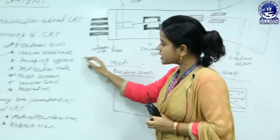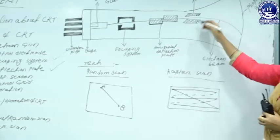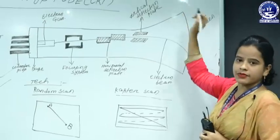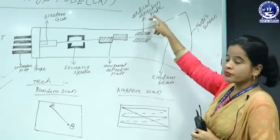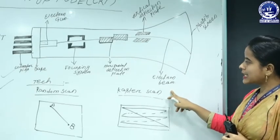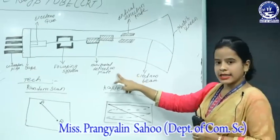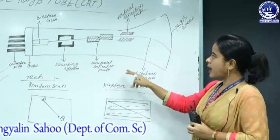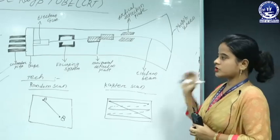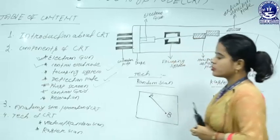Now going to the next concept — that is your deflection plate. What is a deflection plate? There are two types: one is the horizontal deflection plate and another is the vertical deflection plate. Generally, this deflection plate describes the direction of the electron beams. The deflection plate creates a magnetic field and an electric field through which the electron beam is directed to the given area where the picture is produced.